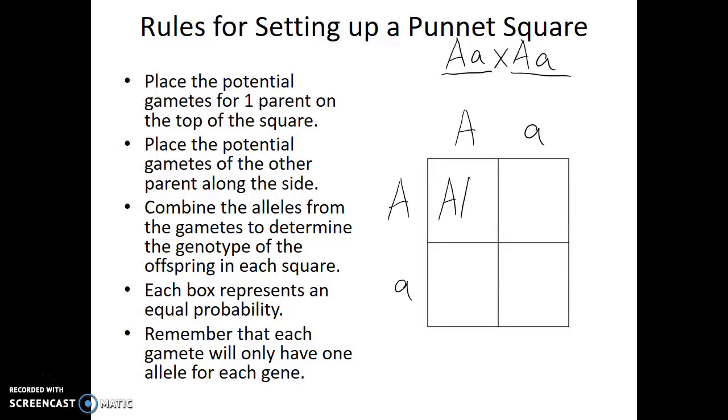To fill in this square, we look at the letter that's above the column and we look at the letter that's in front of the row. And we add both of those alleles or both of those letters to the box. For the second square, we see there's a capital A and a lowercase a. When we go to the second row, capital A and lowercase a.